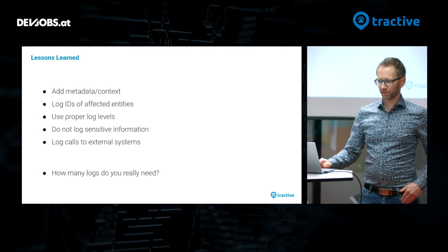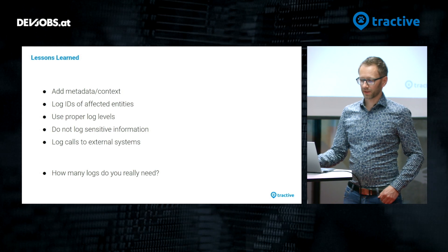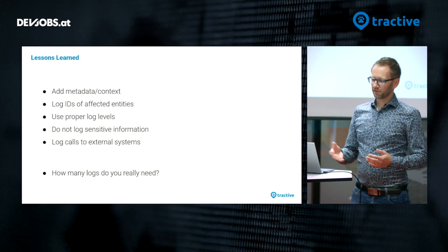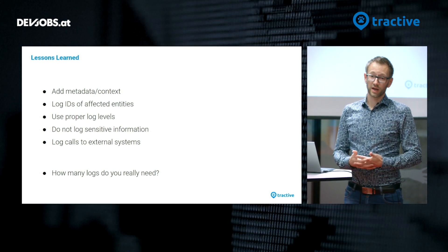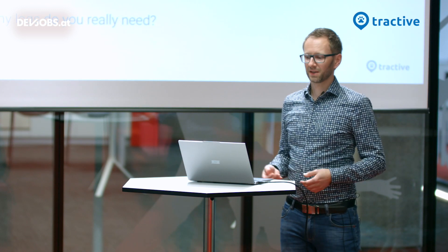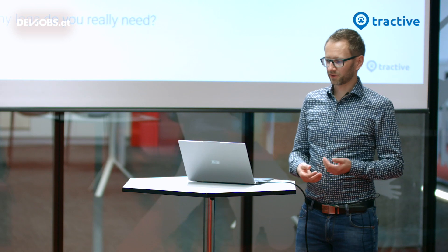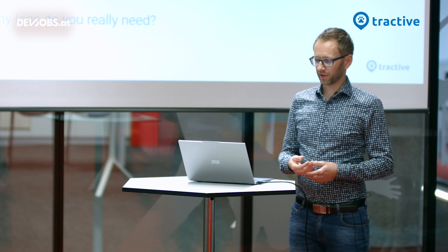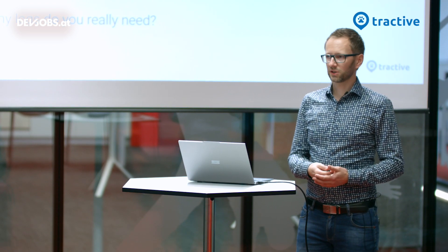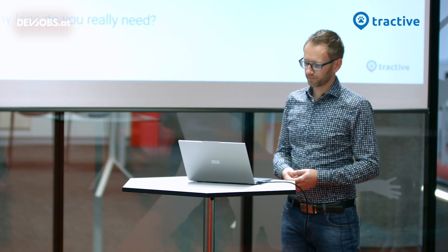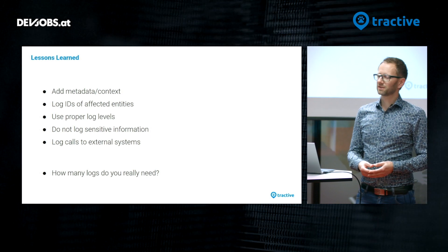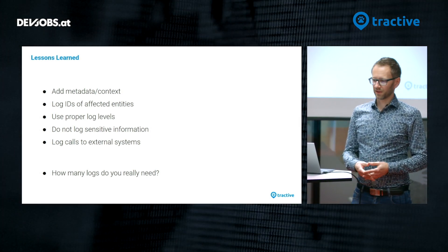What are some lessons we have learned from setting up a logging system this way? It's very important to add lots of metadata and context to any log message. If a log message just says 'user logged out,' it's not worth anything unless you know which user. So add the IDs of any affected entities — if it's about creation of a pet, add some information about the pet; if it's about deletion of objects, at least note the ID of that object. Also important is to use proper log levels — you may want to log more information in a staging or test environment than in production. And make sure you never log any sensitive information like personally identifiable information, secrets, keys, or API keys.